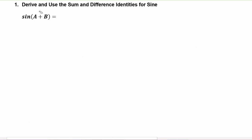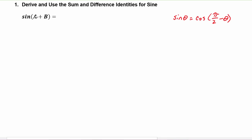To derive the sum identity for sine, we're going to start off using a co-function identity. Recall that sine of theta is equal to the cosine of pi over two minus theta. Applying this co-function identity to sine of (a + b) means we can write it as the cosine of pi over two minus (a + b).